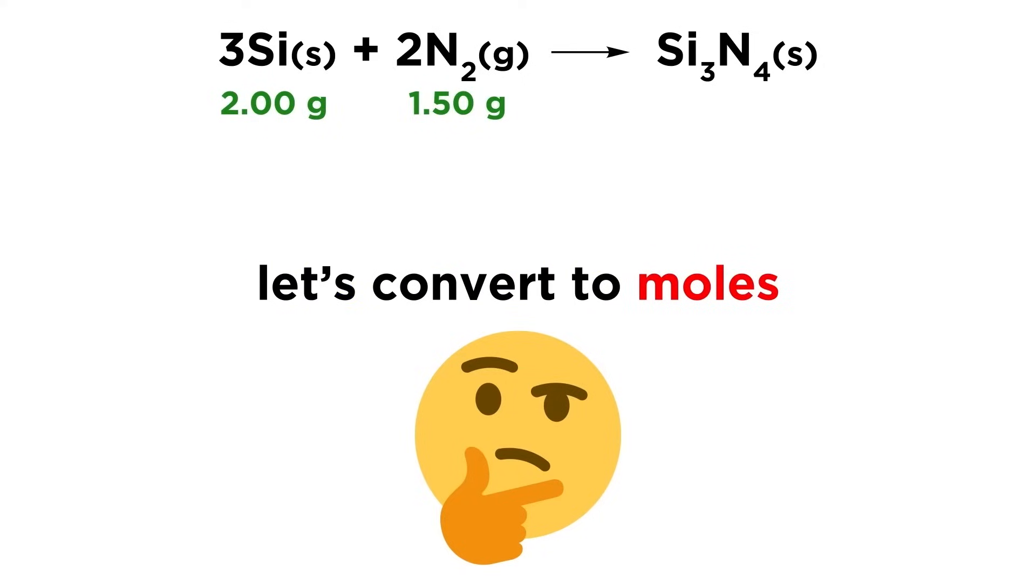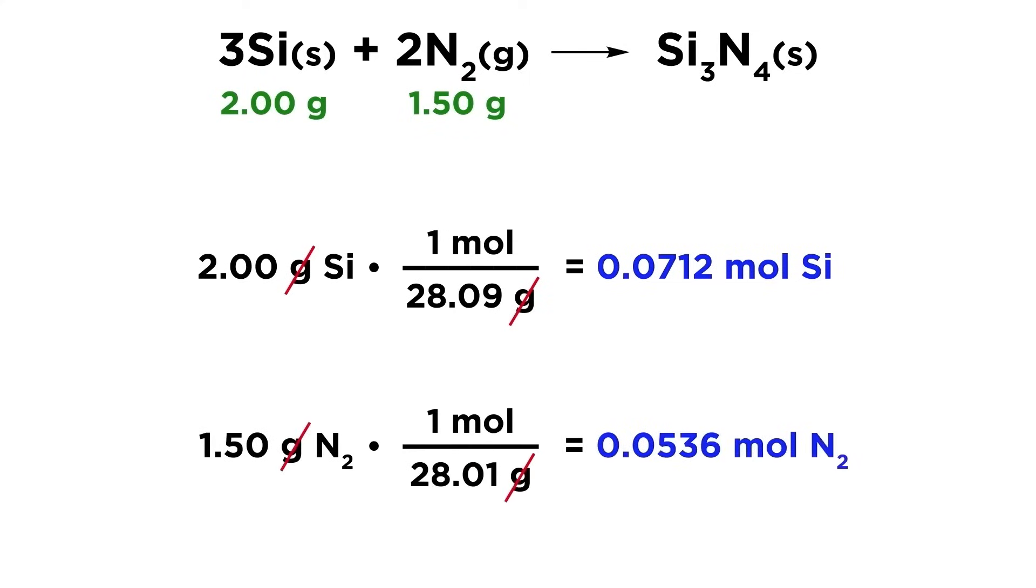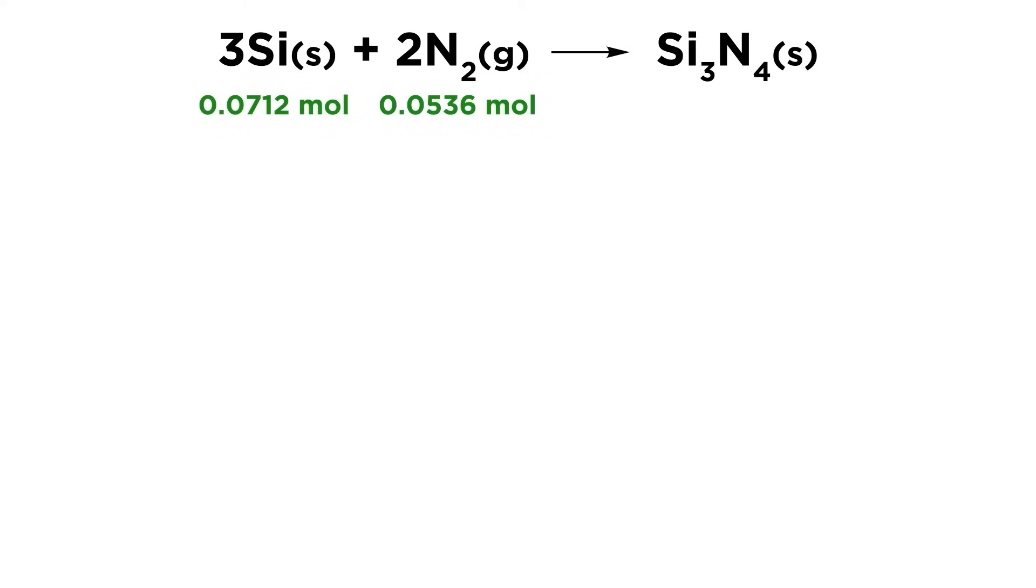Let's use the molar masses of silicon and nitrogen to convert these into their respective molar quantities. So 2 grams of silicon divided by its molar mass gives us this many moles of silicon. Let's do the same with our mass of nitrogen, and we end up with this many moles of nitrogen. Let's replace our gram values here with the molar quantities we just calculated.